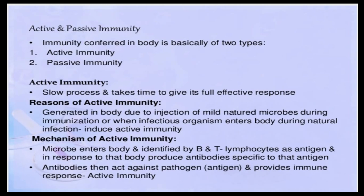Active immunity is a very slow process and it takes sufficient time to give an effective response. It is generated in our body due to the injection of a very mild-natured microbe. There is a mild-natured microbe which naturally enters the body — this is called natural infection — or we deliberately inject a vaccine into the body.